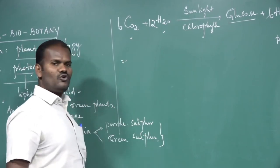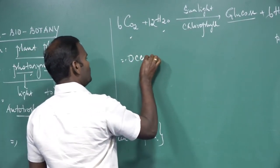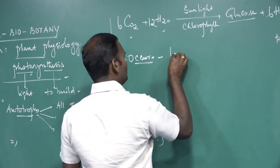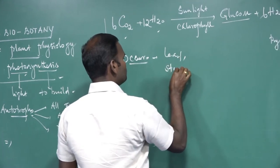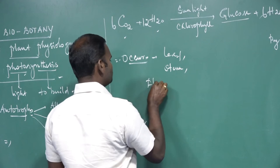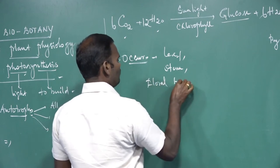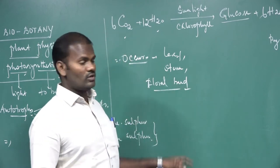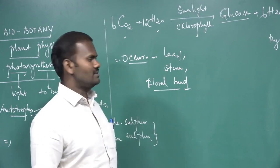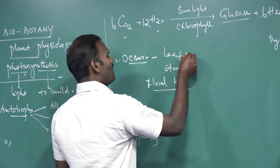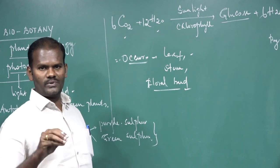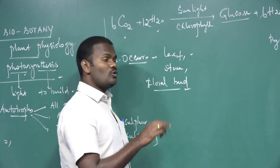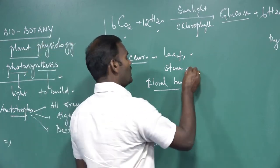Where does photosynthesis occur? It occurs in all green parts of the plants — for example, the leaf, stem, and floral bud. Young floral buds also contain chlorophyll pigment; they are green in color due to the presence of chlorophyll, and they manufacture their own food materials. The leaf is the most important organ for photosynthesis. The stem also performs photosynthesis — for example, Opuntia.